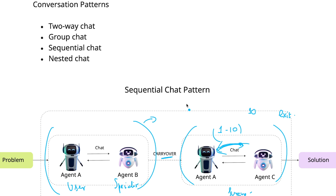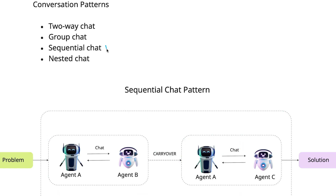Here we observed that we started with a conversation between the user agent and the specialist agent. With the carryover mechanism, we took the summary of that discussion and passed it as context to the surveyor agent, which asked for a rating on a scale of 1 to 10. All this information can be stored in memory or saved in database tables to track customer interactions. I believe you've understood how to implement the sequential chat pattern. In the next session, we'll cover the nested chat pattern with a practical example.